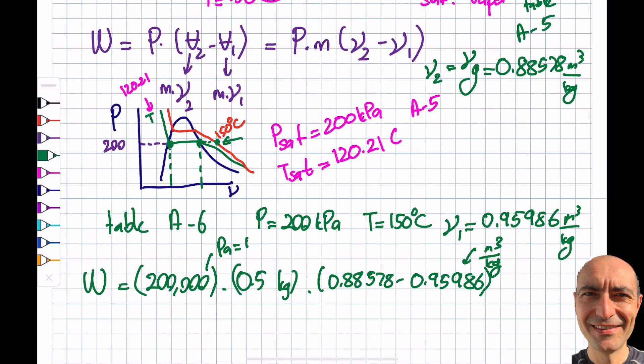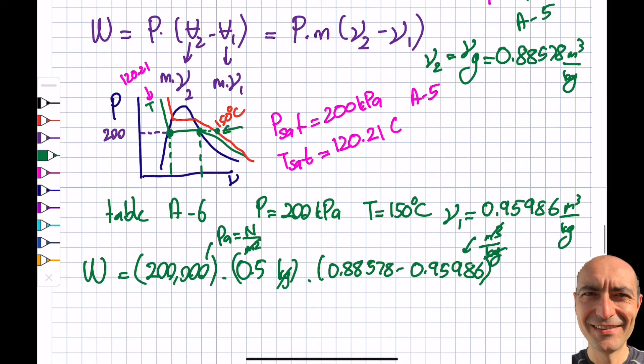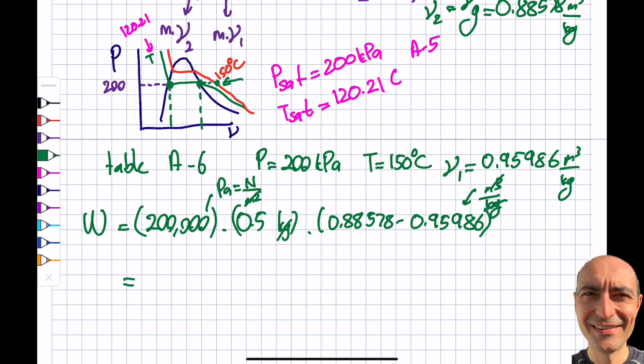Let's write newton per meter squared in here just to see the units. You can see the kilograms cancel, meter squared and meter cubed becomes meter, newton meter is joules. So I'm onto something here. When I type this into my calculator, I get -7408 joules. If you want, you can write 7.4 kilojoules of work that I have to put in for this to happen. Thank you for watching.